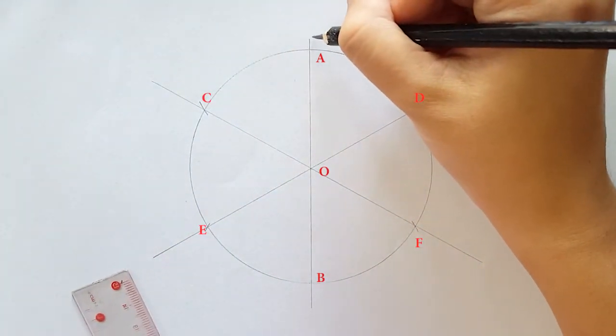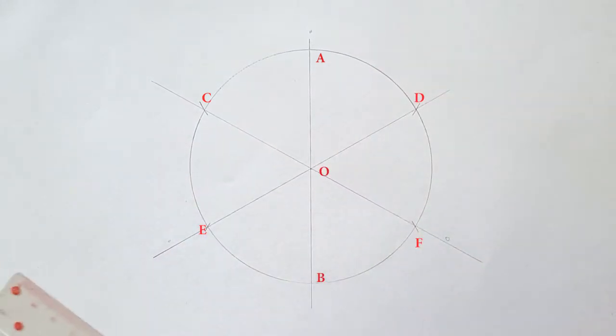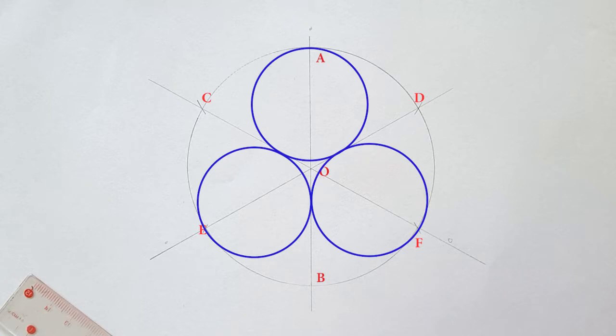I draw a tiny circle to indicate where the circle will be constructed later. Now, we're going to inscribe 3 equal circles in a circle using triangle method.